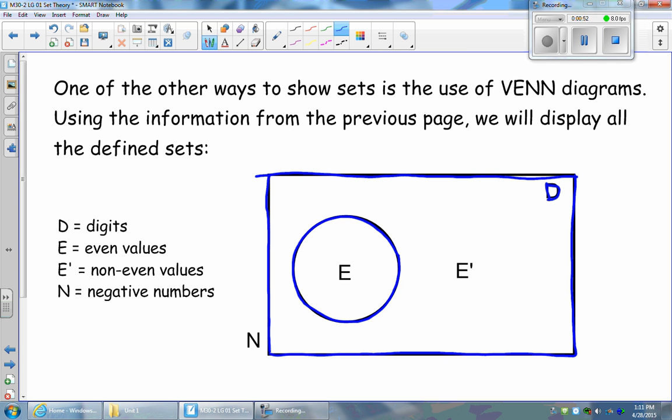So our numbers that would fall into our subset E would be 2, 4, 6, 8, and 10. Those are all our even digits. So they would all fall within the circle that represents the set of even digits.